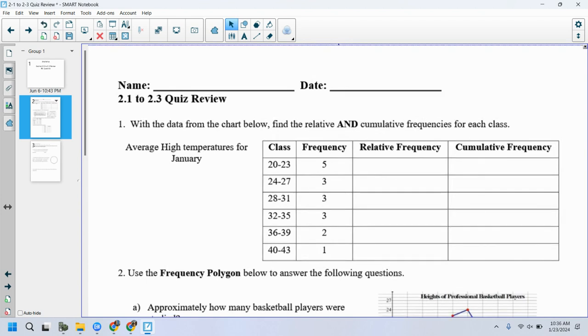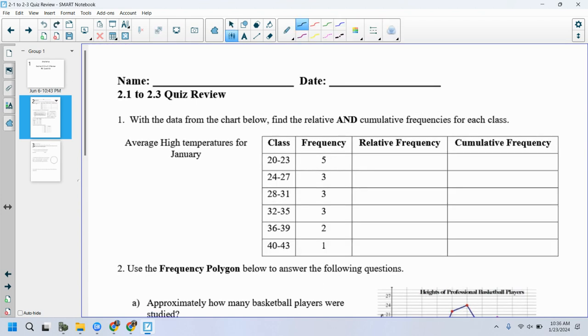Cumulative frequency is 5, 8, 11, 14, 16. Did you guys get 17? Yeah, I'm up. Right. All right.